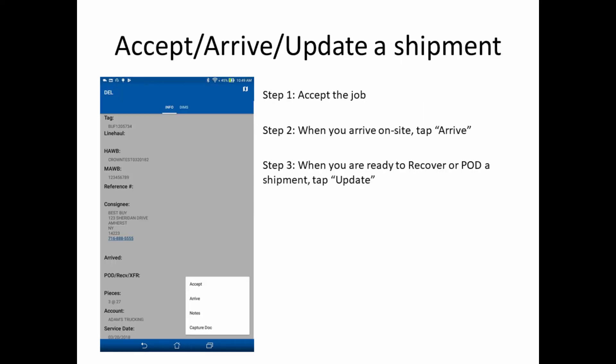After you've received the job and tapped on View, tap on the plus button in the lower right corner to accept the job. After you've driven to the pickup or delivery location, tap on the plus button again, and then tap Arrive.